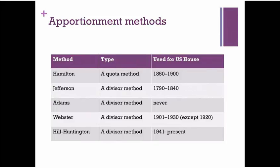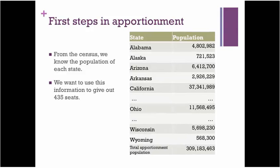Let's think about how we would do this ourselves, quite naively. We assume the census has already been conducted and we know the population of each state. For example, Alabama's population at the 2010 census was 4,802,982. The last two states are Wisconsin and Wyoming, and since we're in Ohio, I'm also showing Ohio's official 2010 population of 11 million and so on. If we add all these up, we get the total apportionment population — the total we'll work with. Note that it's not actually the total US population, because certain people are not represented in the House, most notably those living in the District of Columbia.